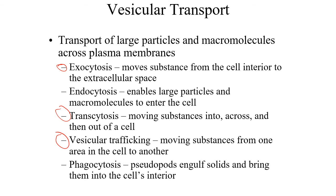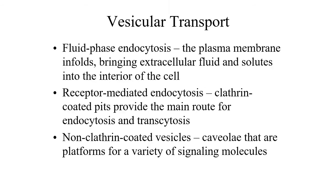White blood cells have the ability to perform phagocytosis — essentially eating bacteria, virally infected cells, or tumor cells. The cell sends out little pseudopods around the particle, which extend outward and eventually engulf the substance into the inside of the cell.